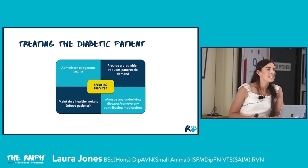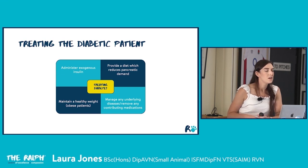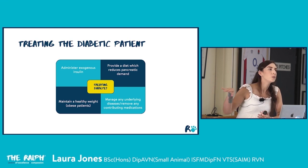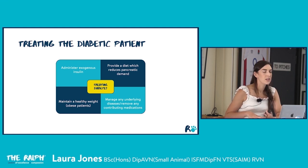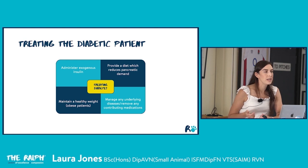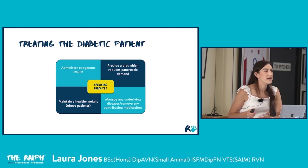Once we've diagnosed a diabetic, treatment depends on whether we have an unstable ketoacidotic patient or a more stable long-term diabetic. For non-ketoacidotic diabetics, our goals are to administer insulin but also to address diabetes from multiple angles: looking at diet, any contributing medications or conditions, and patient weight. We want a diet that reduces the demand on the pancreas, a healthy weight in obese patients — since obesity causes insulin resistance — and removal of contributing medications where possible.